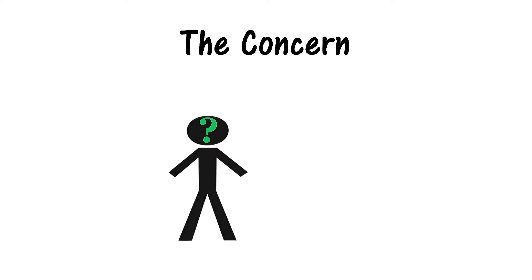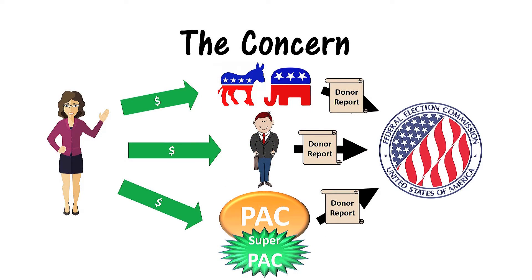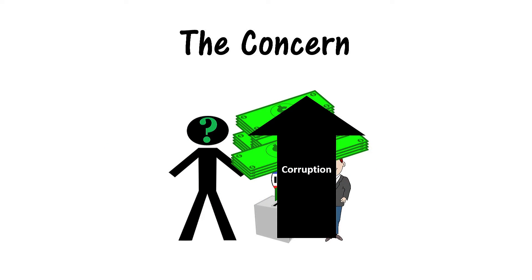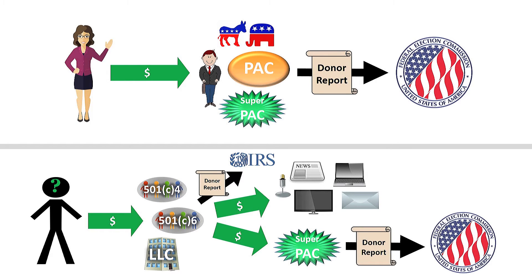The concern with dark money is that individuals and organizations can give large amounts of money to influence elections and gain influence over politicians without the public knowing. As a result, the purpose of campaign finance disclosure requirements is undermined, and there is an argued increased likelihood of political corruption. In short, an individual who gives a limited contribution to a candidate committee, political party committee, PAC, or super PAC has his or her name reported to the FEC and made public. However, an individual or organization who gives an unlimited amount of money to a 501(c)(4), 501(c)(6), or LLC can do so anonymously, and the dark money group can then spend money on its own or contribute to a super PAC — and the public won't know where the money originated.